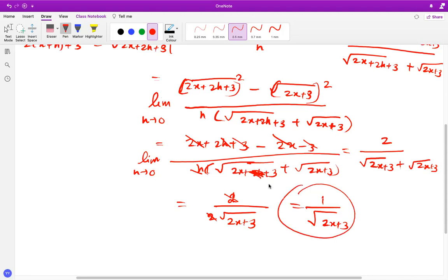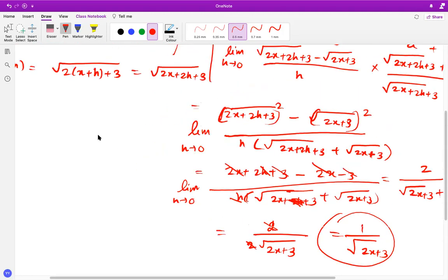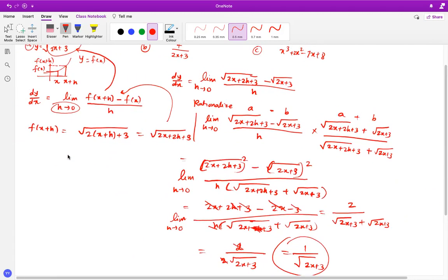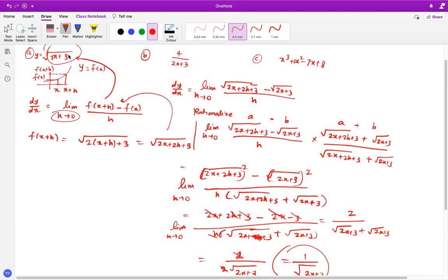my final answer is 1 over square root of 2x plus 3. So this is the final derivative for this particular example, one of the very, very important example for IB, so please, please make sure to practice such question.